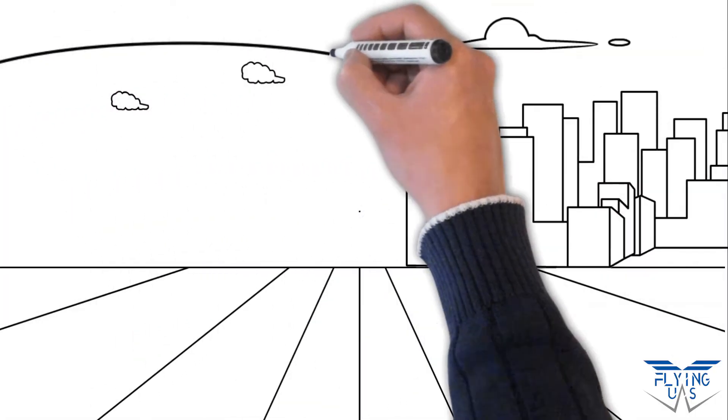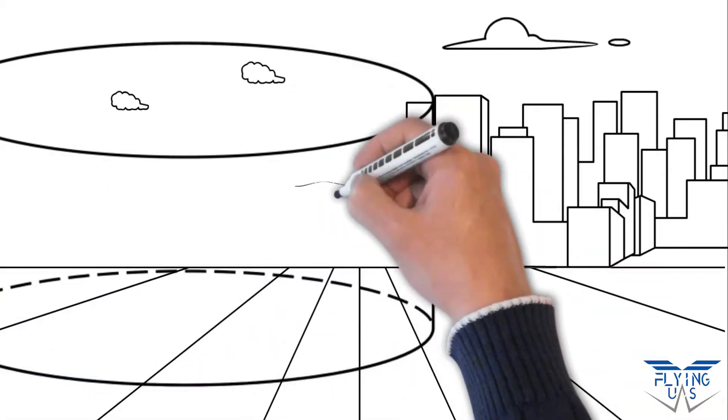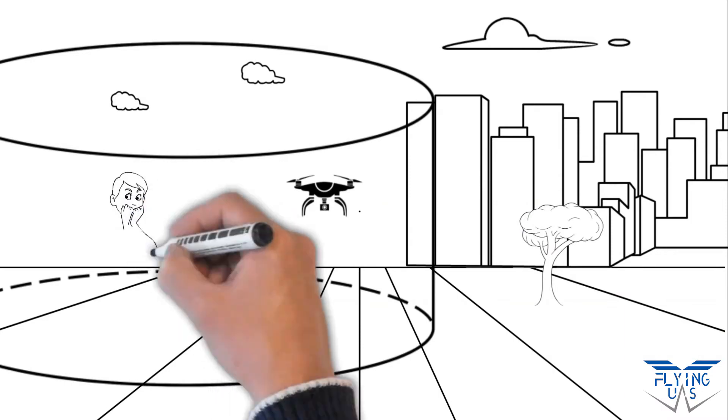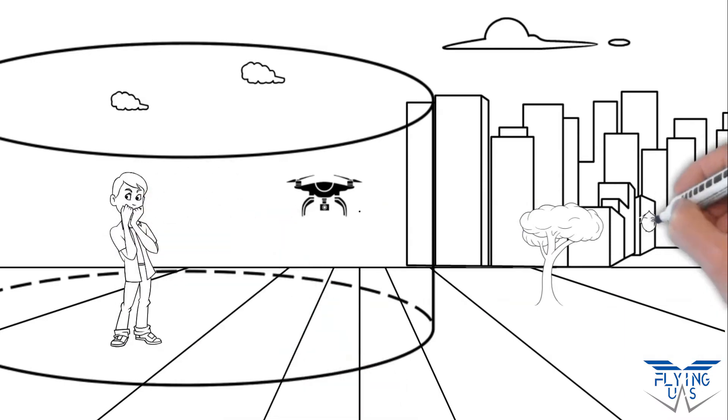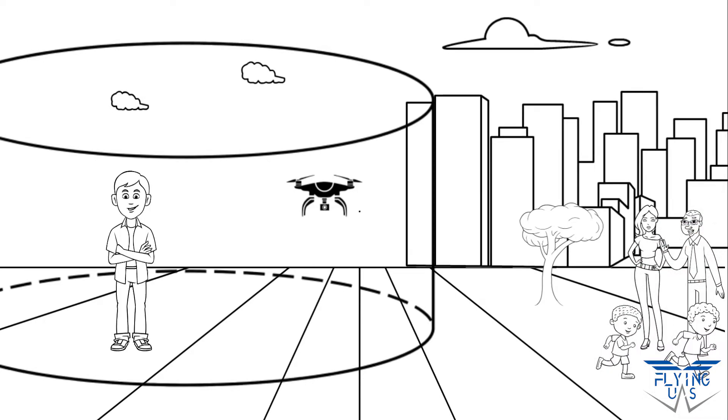If you are wondering if it is possible to fly only in large open spaces such as the countryside, hills, or plateaus away from everyone and everything, the answer is negative. The European Union has decided to subdivide the open category into three further categories. This is to allow the operator to fly even in spaces where there is the presence of people and buildings.